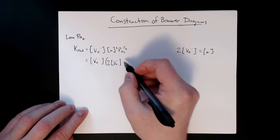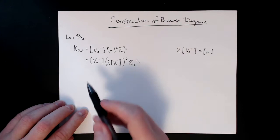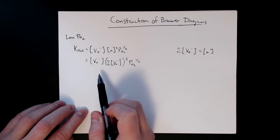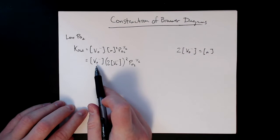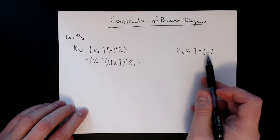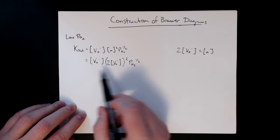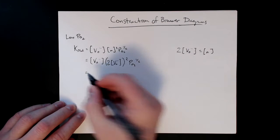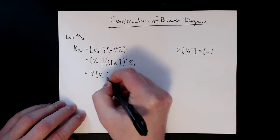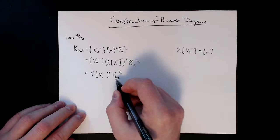We get two times the site fraction of oxygen vacancies, all squared, times pO₂ to the one-half. So combining all of this, we get four times the site fraction cubed equal to pO₂ to the one-half. This is equal to the mass action expression or equilibrium constant K_red for that reduction reaction.